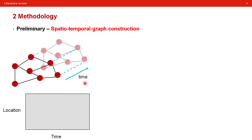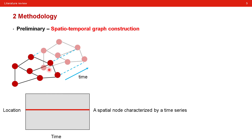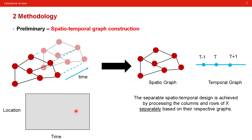First, I would like to go through some preliminaries for better understanding their work. The spatial-temporal data can be represented as a matrix where the number of rows indicates the number of spatial locations, and the number of columns equals the overall time steps. Each node can be regarded as a spatial node characterized by a time series, and a column is a temporal node with observations of different locations as features. We have a separable spatial-temporal design, processing rows and columns separately based on their respective graphs.